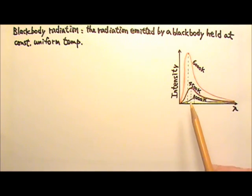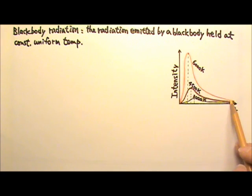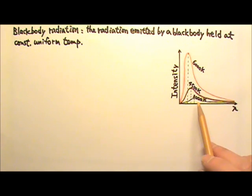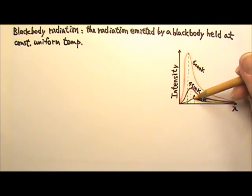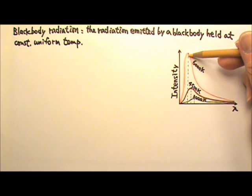One, the distribution of intensity for various wavelengths depends on the temperature of the black body. Two, the total amount of radiation emitted increases as the temperature increases. Three, the wavelength with peak intensity decreases with increasing temperature.